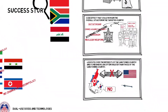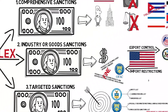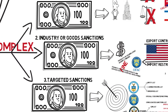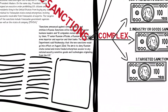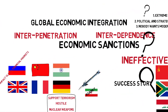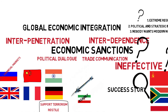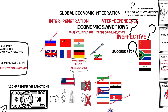But in the global connectivity of today, countries, industries, companies, and individuals are all inextricably linked. The target country experiences a series of economic impacts that often spill across borders, making sanctions a poor tool for effecting the desired changes. Is there a better way? Perhaps political dialogue and trade communication should first be exhaustively explored before sanctions are imposed.